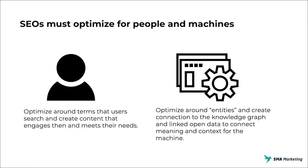Today's SEOs have to optimize for both people and machines — you can't ignore one or the other. You have to optimize around terms that your users are searching for and create content that engages them and meets their needs. This is why I still focus a lot on empathy and understanding the psychological side of our users — understanding why they're searching, what they're searching for, and what they're expecting. But we must also apply that knowledge to search engines and optimize around entities, create connections with the knowledge graph and linked open data, to create deeper meaning within our content that the machines themselves can understand.